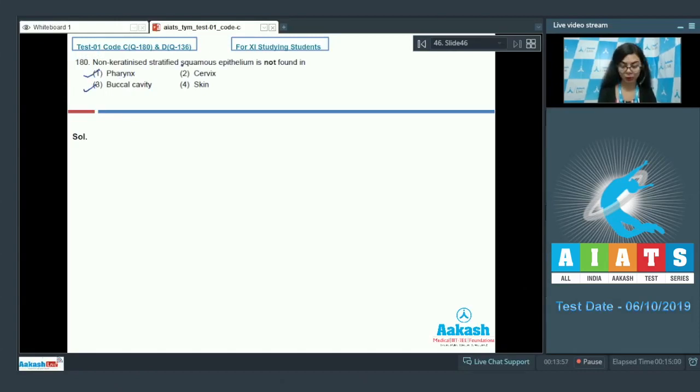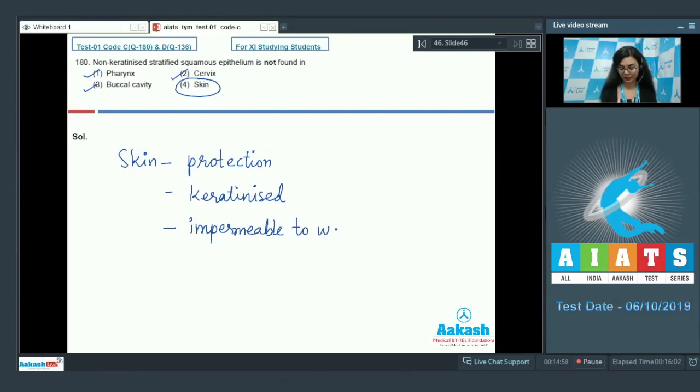Whereas for outer surfaces like skin, protection is one of the important functions. Therefore the epithelium here is keratinized, which gives it a rough, dry appearance which suits for its protective function. And also keratin makes it impermeable to water. The correct option here would be skin because the skin epithelium is keratinized. The right answer is option number four.